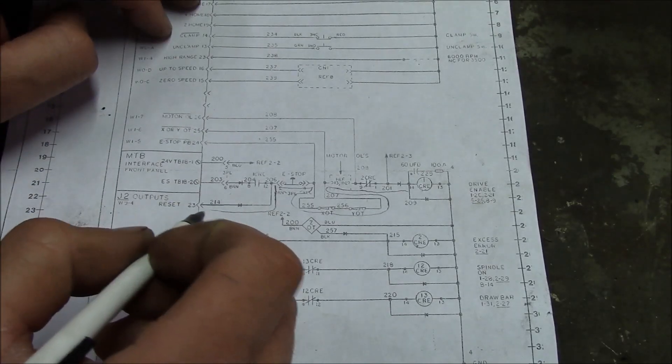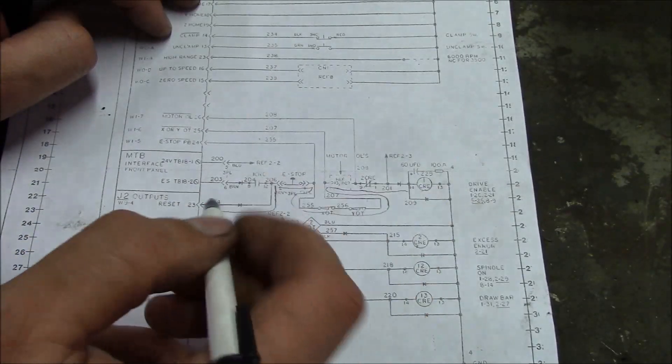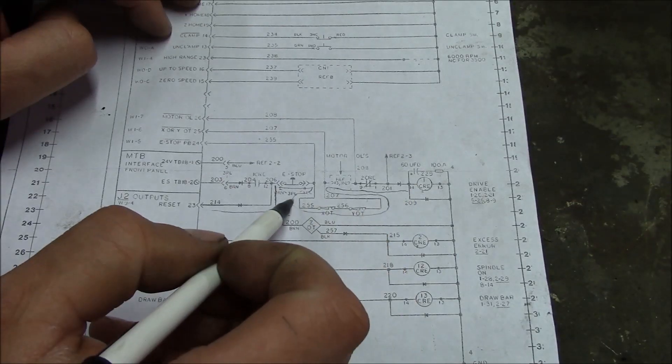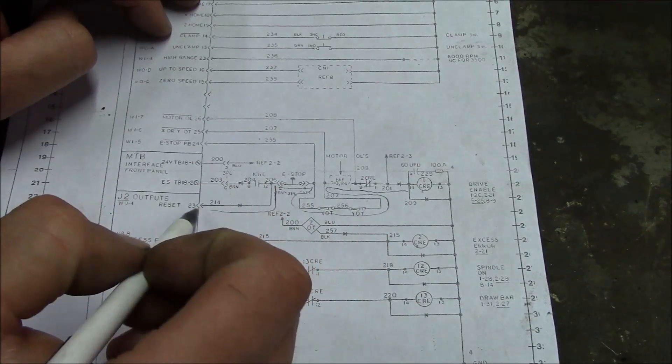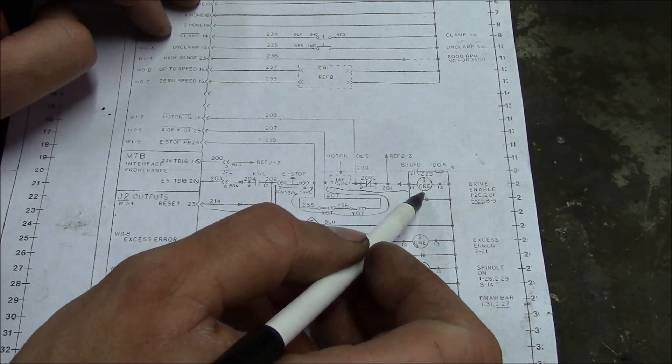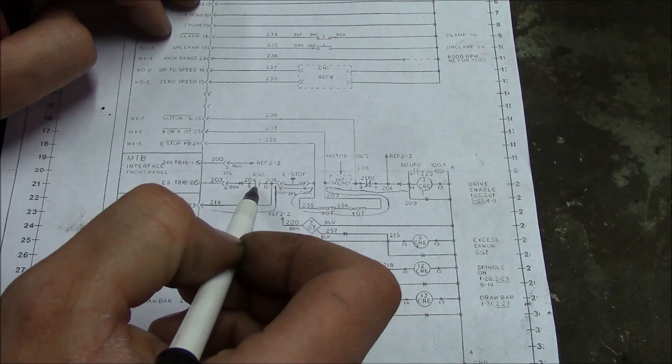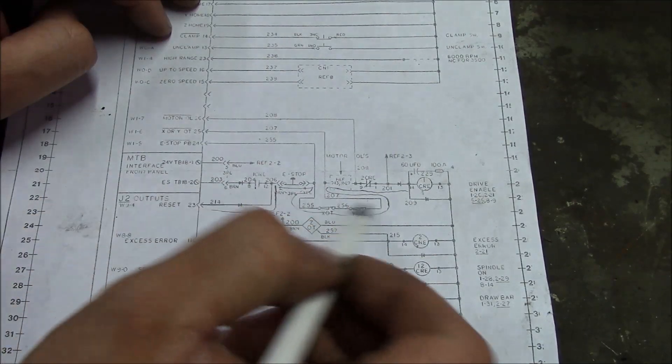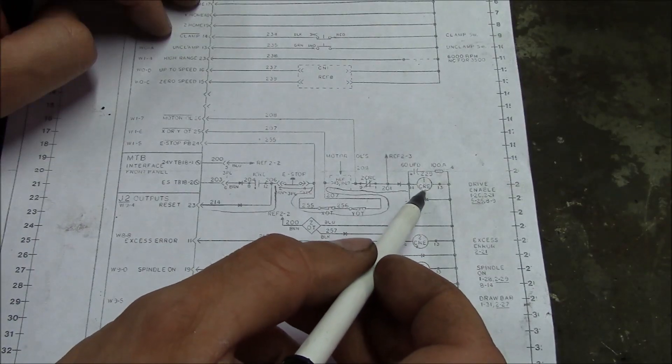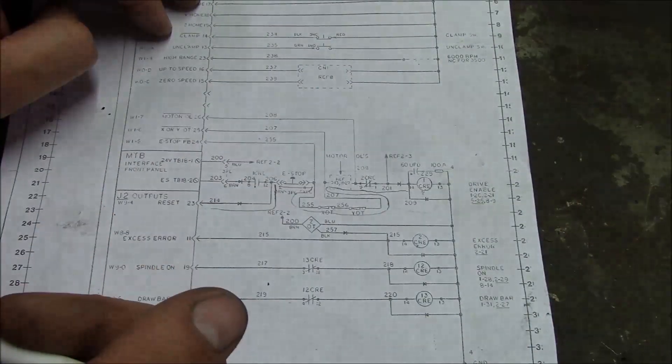So what we've got to figure out is why, basically why this isn't working. Right now what's happening is 1CRE is not pulling in, and we need to figure out why. So basically once 1CRE coil is energized, then this contact closes, and basically it's a latching relay. So once 1CRE is latched, then the machine basically is powered up and ready to go.